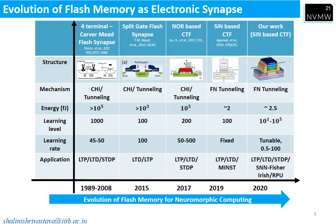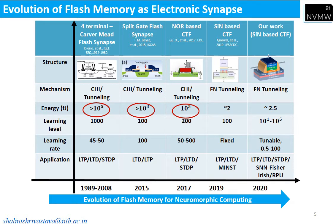In 1989, Prof. Carver Mead demonstrated synaptic behavior with a single transistor, which is a flash-based 4-terminal device working on a CHE mechanism that dissipates more energy. This device was used as a synapse until 2008 for demonstrating different applications. After 2008, many emerging technologies such as R-RAM, PCM, and FT-RAM were demonstrated as synapses. In 2015, Prof. Stukroff's group from UCSB, in collaboration with silicon storage technology, demonstrated split-gate based flash memory as a synapse, though it also works on the CHE mechanism and hence dissipates more energy.